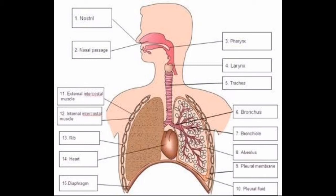At the bottom of the pleural cavity is a muscular partition called the diaphragm. You can see all these structures clearly in the picture. This is all about the respiratory system of human beings.